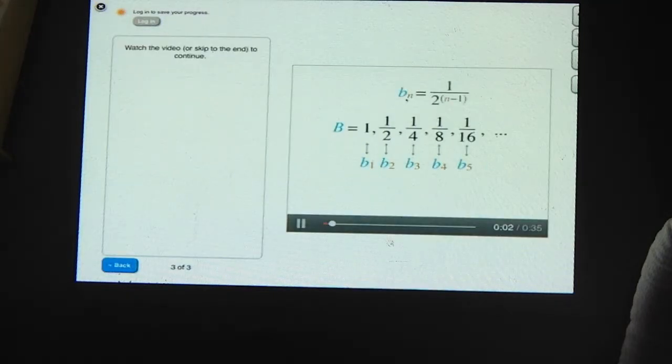Exactly right. Bn equals 1 over 2 to the n minus 1. Let's double check that answer by making sure that B5 is indeed equal to 1 sixteenth. By this formula, B5 is equal to 1 over 2 to the 5 minus 1. 5 minus 1 equals 4. And 2 to the 4th equals 16. So sure enough, B5 equals 1 sixteenth.